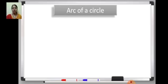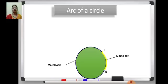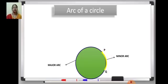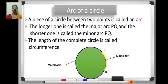Now, arc of a circle — I am revising all those concepts required in this chapter, which we have already learnt in the circle chapter. An arc is a part of the circumference of the circle. If you take any two points on the circumference of the circle, that piece of the circle is known as an arc. The longer one is known as the major arc and the smaller piece is known as the minor arc. The length of the complete circle is called circumference.